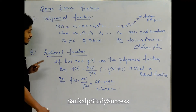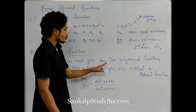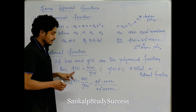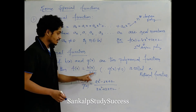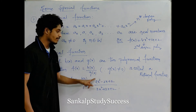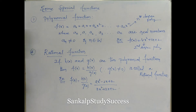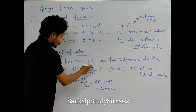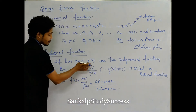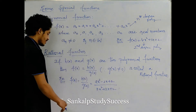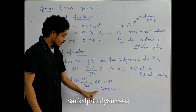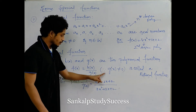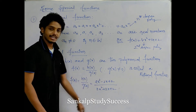Then rational function: if h of x and g of x are two polynomial functions, we make a new function h of x by g of x, where g of x is not equal to 0 — meaning the denominator value is not zero. For example, h of x by g of x equals (2x cubed minus 2x plus 2) divided by (3x squared plus 2x plus 2). This cubic polynomial over quadratic polynomial gives h of x by g of x — this is a rational function.